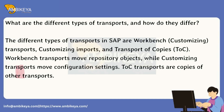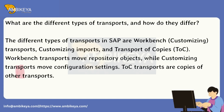What are the different types of transports and how do they differ? The different types of transports in SAP are Workbench transports, Customizing transports, Customizing Imports, and Transport of Copies (TOC). Workbench transports move repository objects, while customizing transports move configuration settings. TOC transports are copies of other transports.